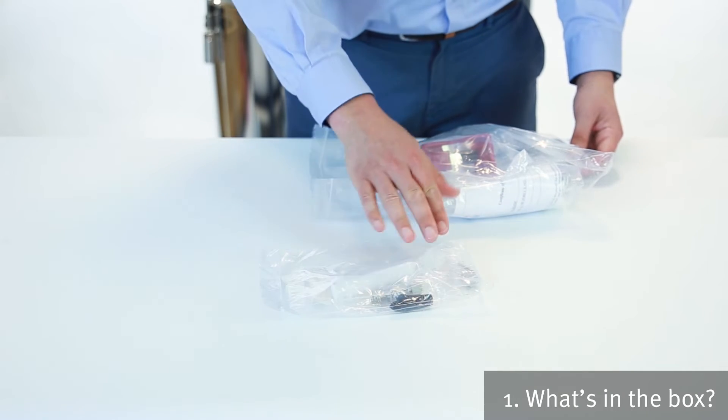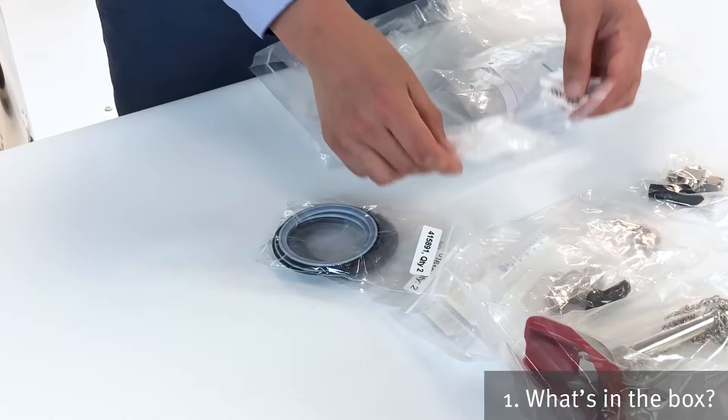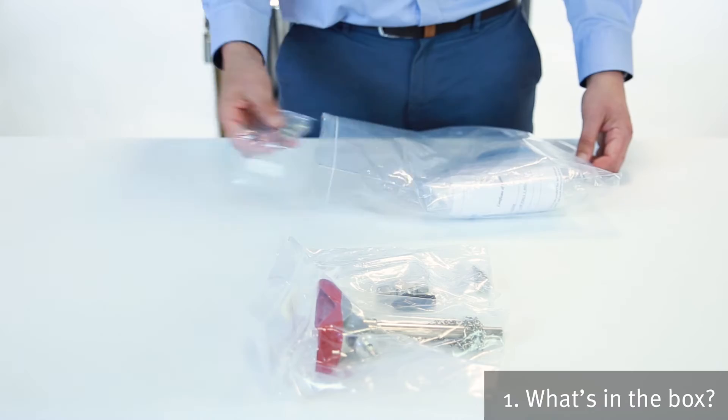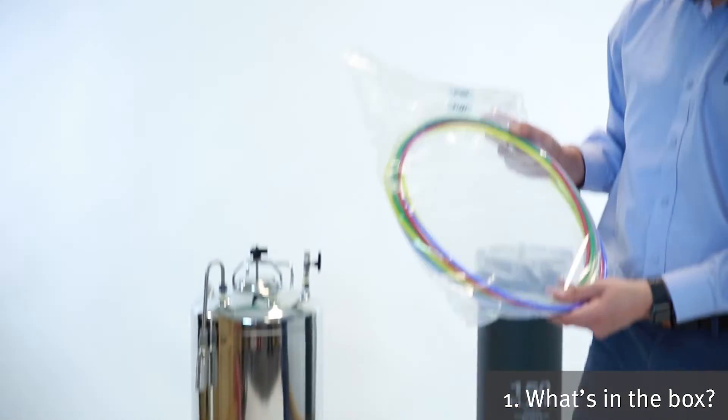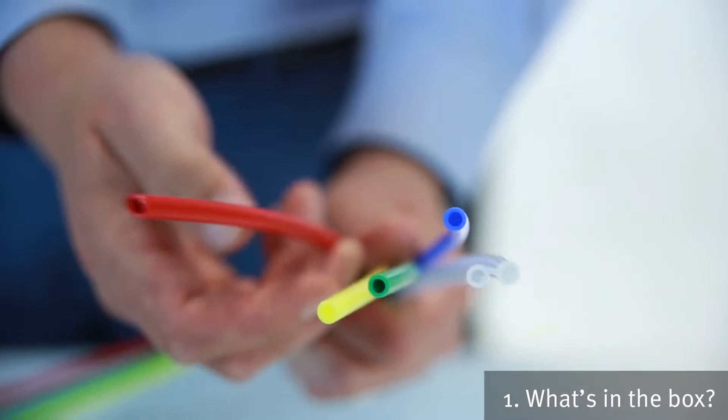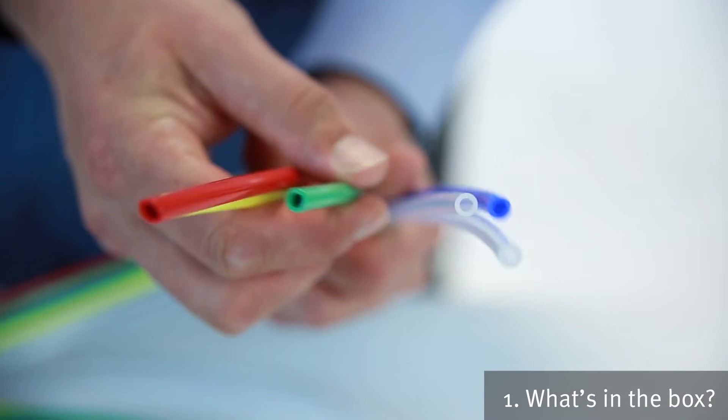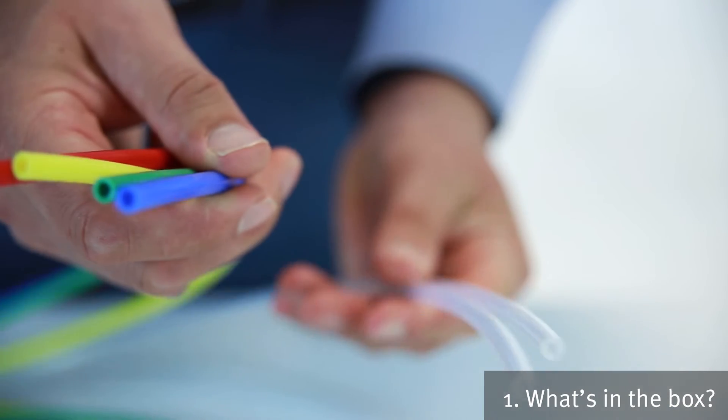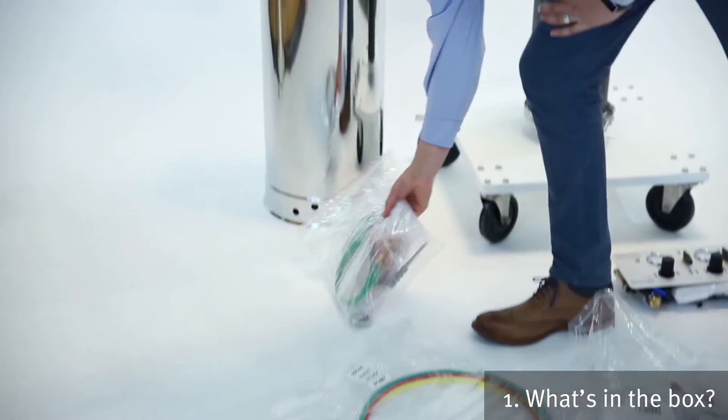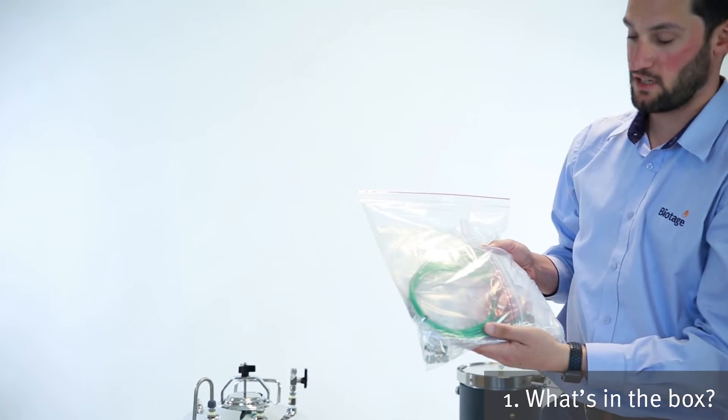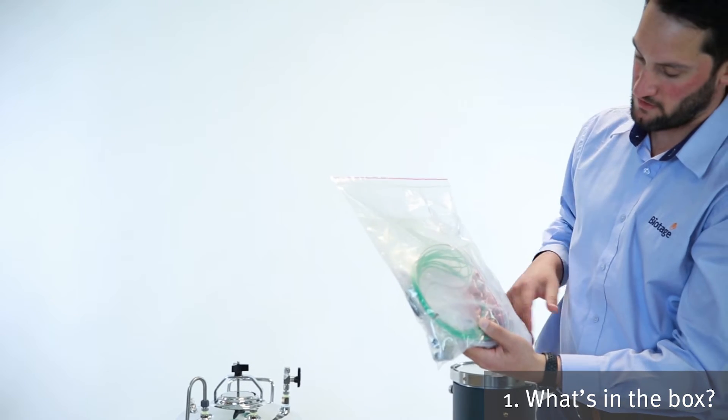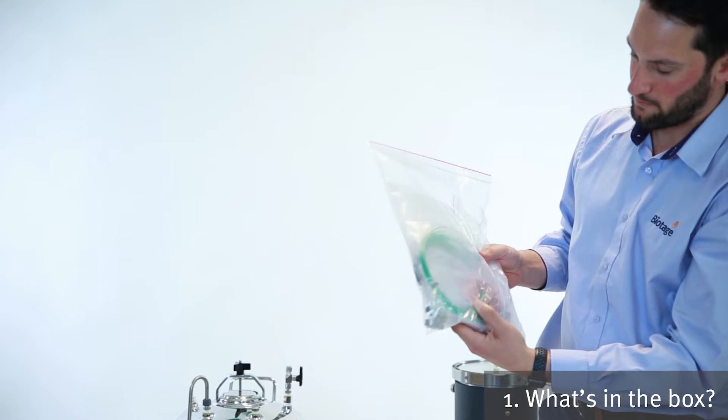We've got a three-way valve. We've got a set of gaskets and seals. Another three-way valve. Also here we've got a variety of different types of tubing. The gas tubing which is colored and the solvent flow path tubing which is clear. Finally, and from a safety perspective very important, we've got the grounding kit. You've got a selection of different types of crocodile clamps there.